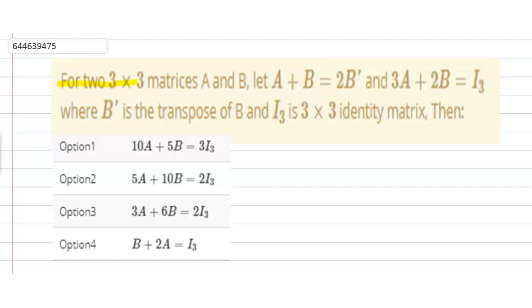The question is for two 3×3 matrices A and B, let A + B = 2B^T and 3A + 2B = I₃, where B^T is the transpose of B and I₃ is 3×3 identity matrix. Then we have A + B = 2B^T, which is our equation first.